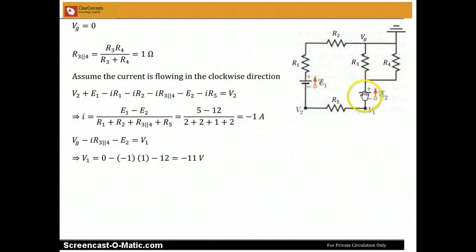Across this parallel combination the equivalent minus IR3 parallel 4, across this second battery in the opposite direction minus E2, across the fifth resistance minus IR5, and we come back to V2. So that is our Kirchhoff's loop rule.